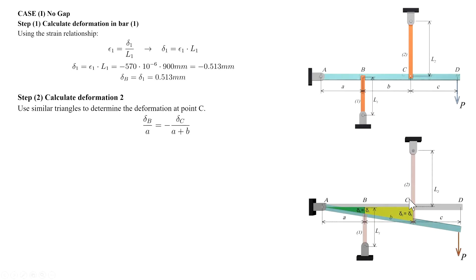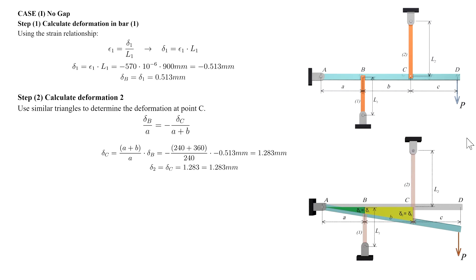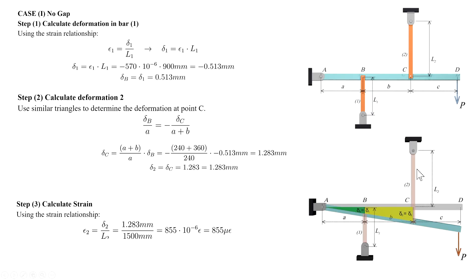There is a negative sign because once element 1 is compressed, element 2 is stretched — so one gets a negative sign and the other is positive. To make compatibility between these two deformations, we use a negative sign. Delta B is calculated, A and B are provided, so we can determine delta C. In this case, the amount of deformation in element 2 equals the movement of joint C downward, so delta 2 equals delta C. Knowing the deformation, we determine strain in element 2 as deformation divided by length. That's the answer for case 1.